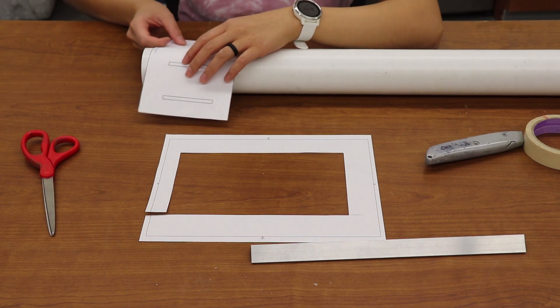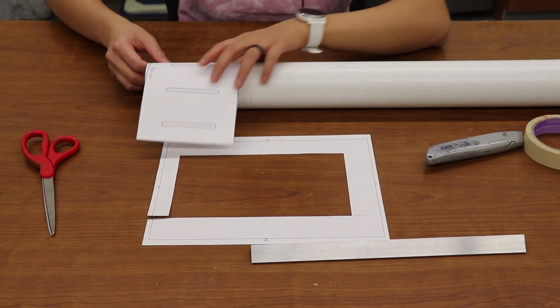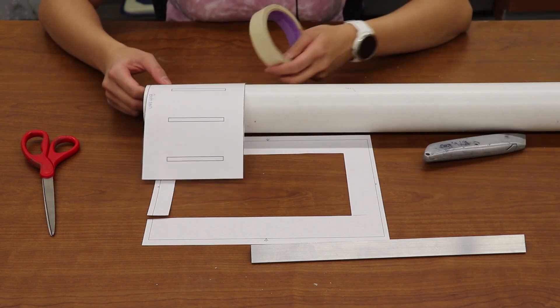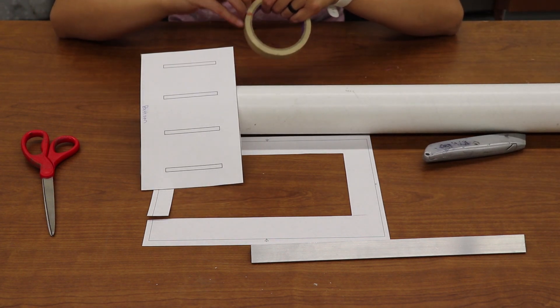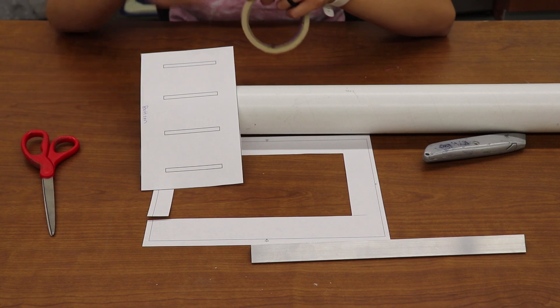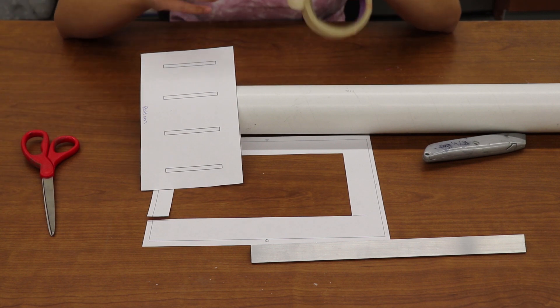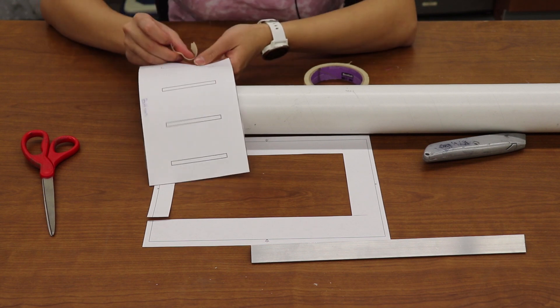Now that the fin slot drawing is cut out, I'm going to tape it around the body tube, but first I'm going to make sure the bottom of the fin slot is lined up with the bottom of the body tube. That's just because of the way I did my drawing in Fusion 360. So I'm going to tape it around the body tube and make sure it's nice and tight so that when I cut out the fin slots it will be in the positions that it needs to be.